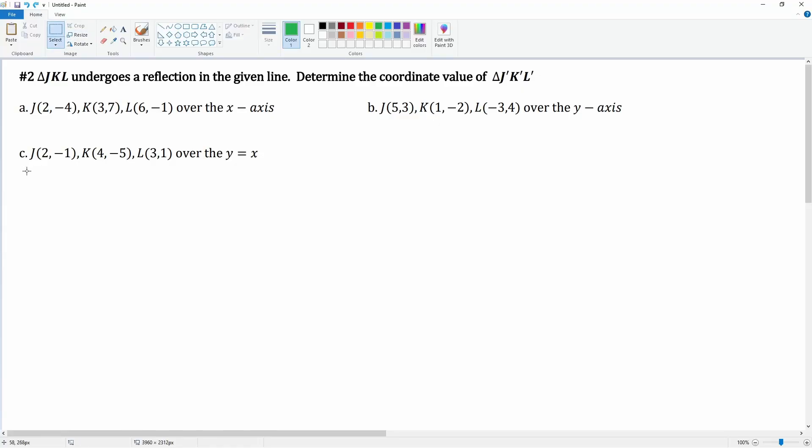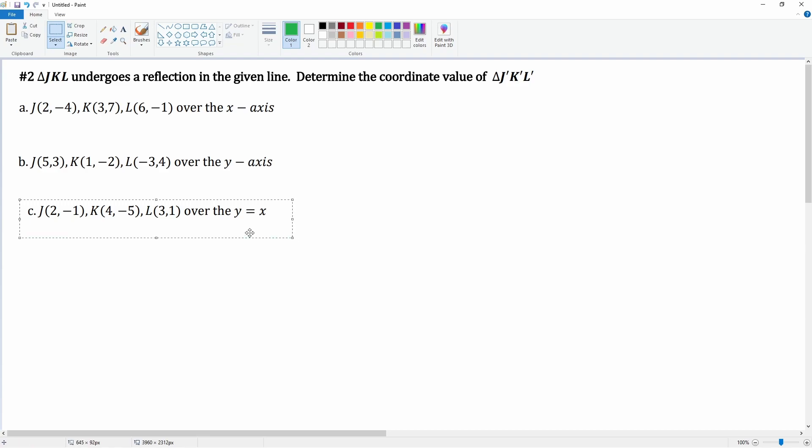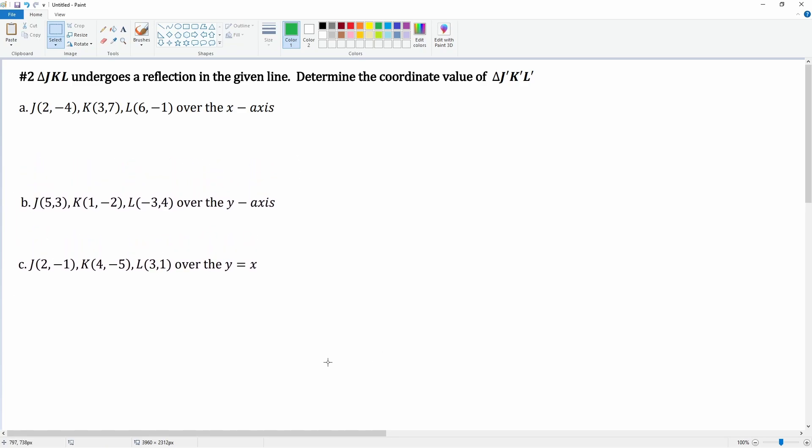This is section 9 number 2. This is asking us to look at triangle JKL undergoes a reflection in the given line here and determine the coordinate of triangle J prime K prime and L prime. I just move these so we can have room so we can see it much better.